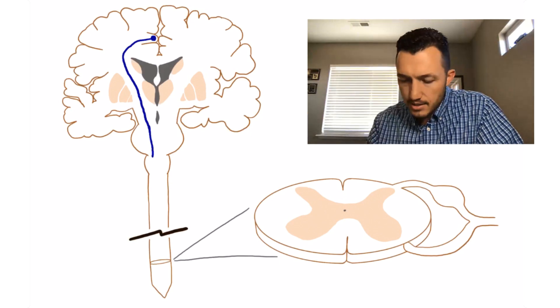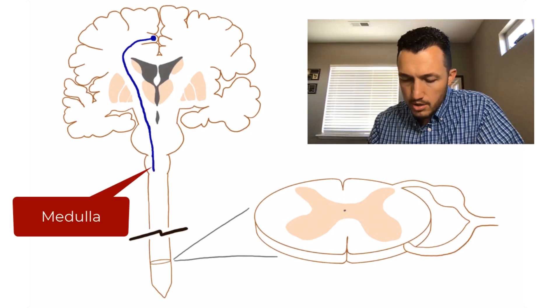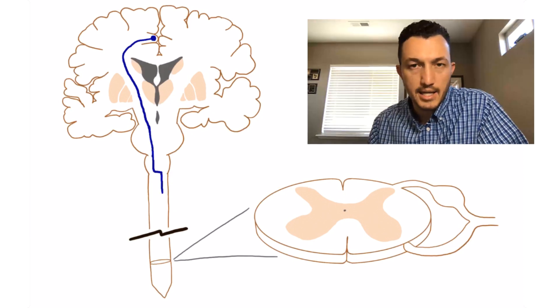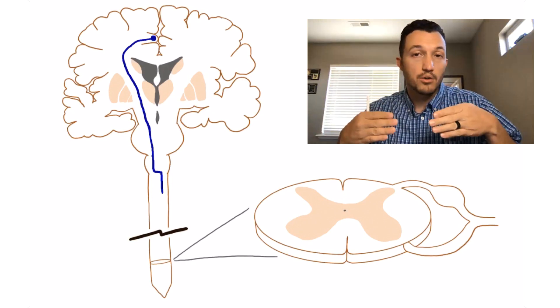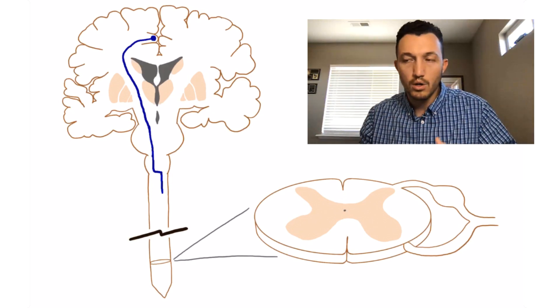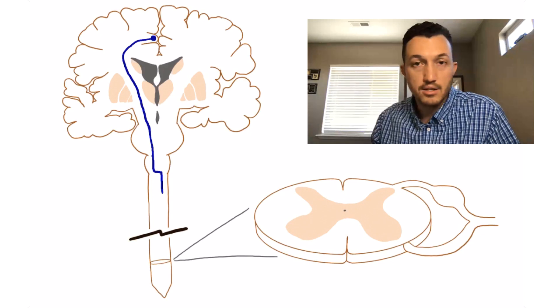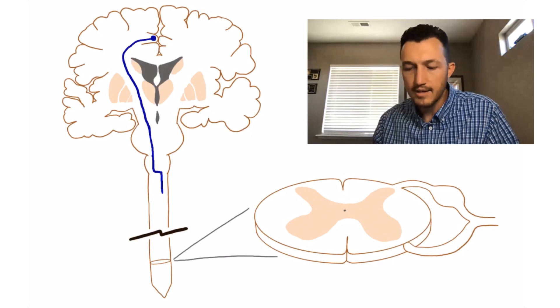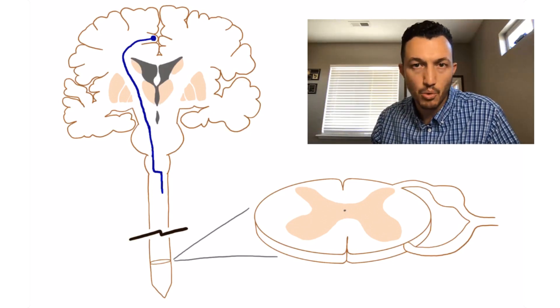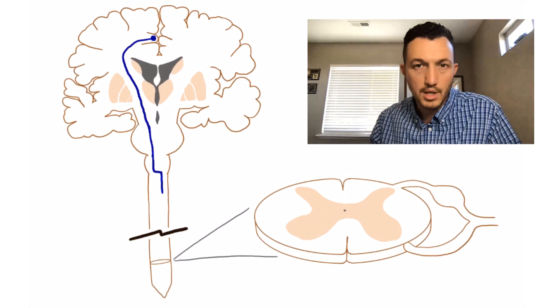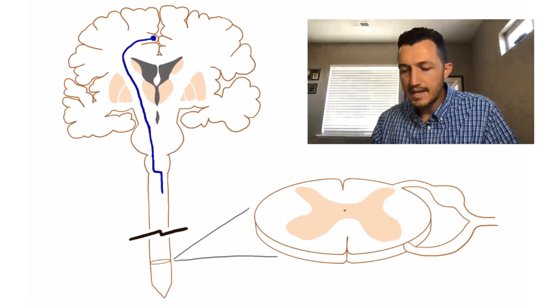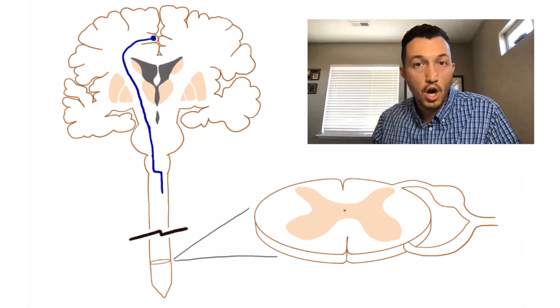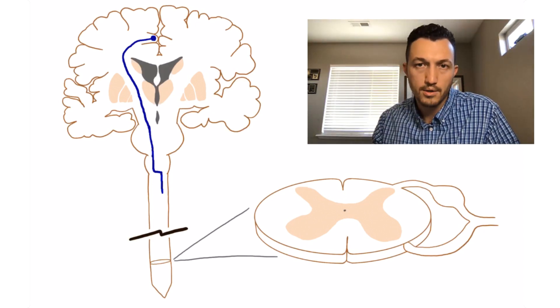But as it gets to the medulla, and specifically in the lower part of the medulla, it decussates, meaning it crosses midline. And so there in the lower medulla is where we have what's called corticospinal decussation, or sometimes the corticospinal tract is also known as the pyramidal tract, and that would be our pyramidal decussation point. So lower medulla, that upper motor neuron axon is going to cross midline, and now it's going to be traveling down the contralateral side of the spinal cord.